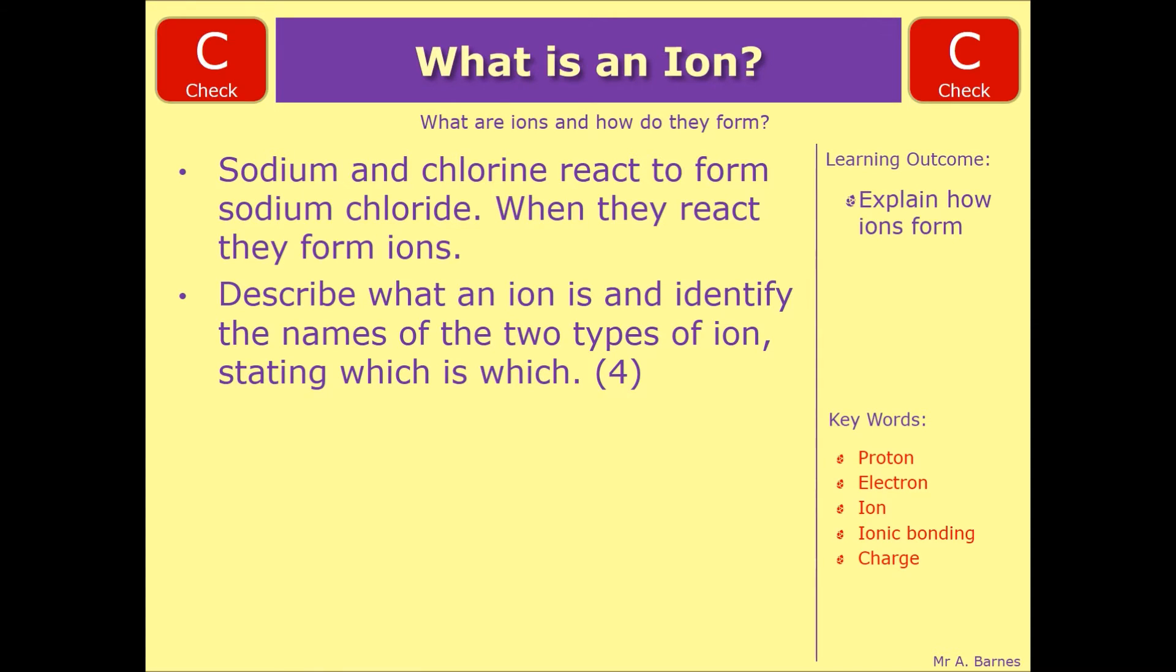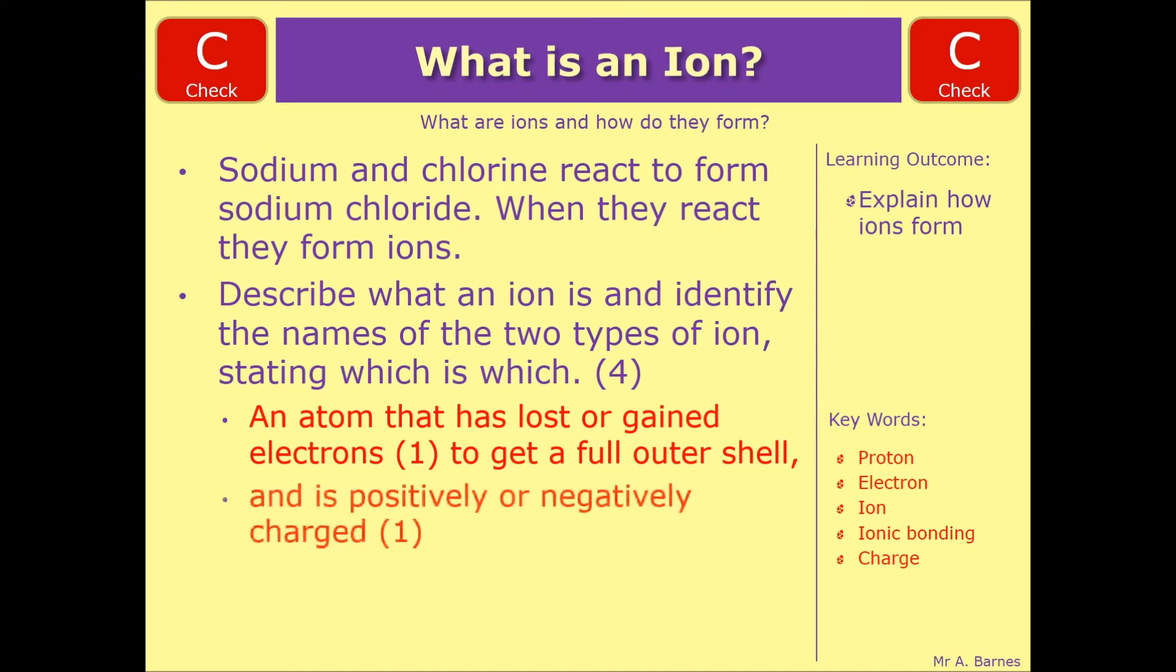Okay, let's have a look. So we'll start off with the description of what an ion is. Nice and simply, an atom that's lost or gained electrons to get a full outer shell. So there's your first mark and then your second one for saying positively or negatively charged. If you had said a charged particle you might get the second mark there as well.